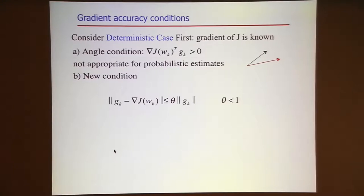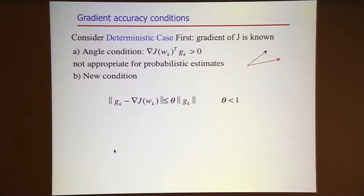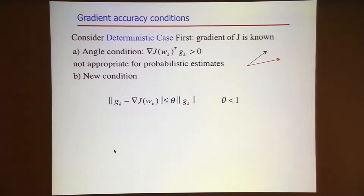Let's call J the true objective function that we want to minimize, and grad J is the true gradient—the all-samples or big sample size problem. Capital G and lowercase g is a stochastic gradient approximation to it. We would like the true gradient and the stochastic gradient to be pointing in the same half space. That would give us descent.